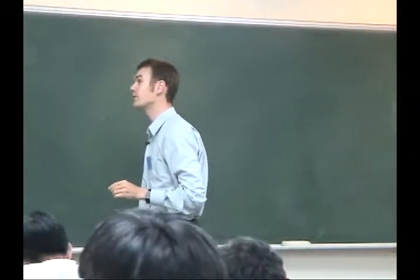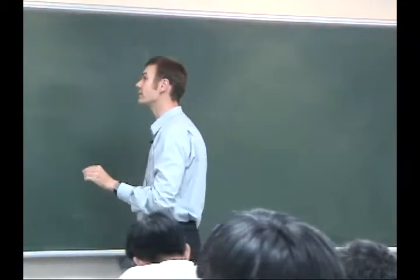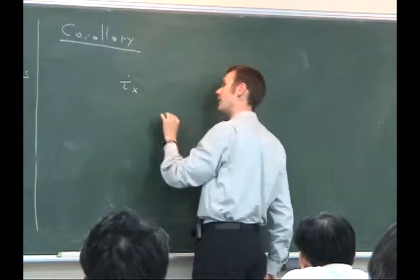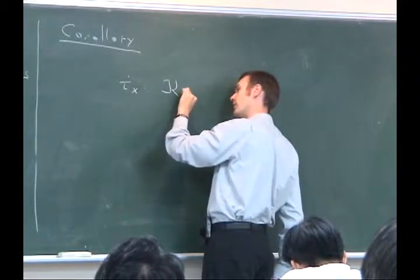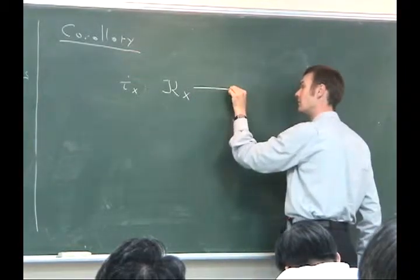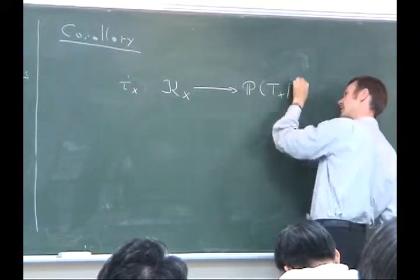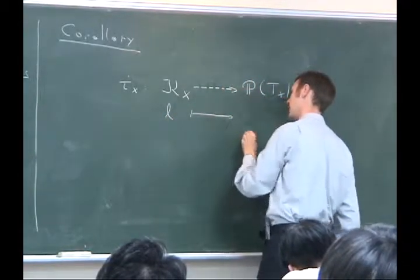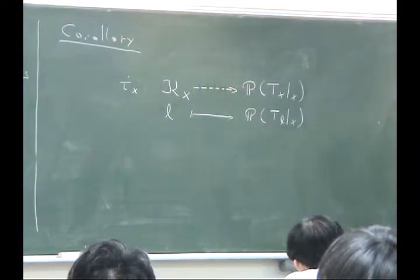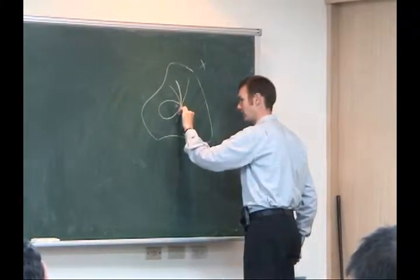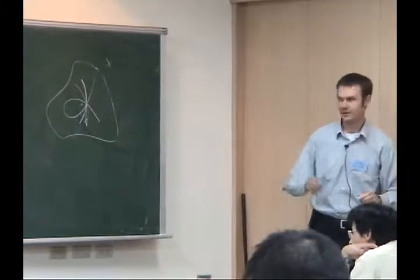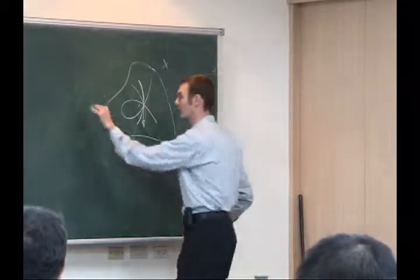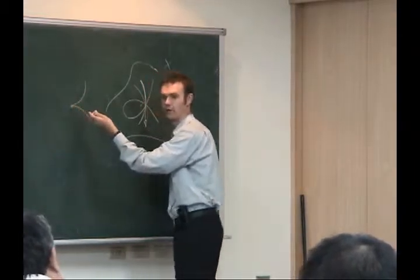Let me draw a corollary from this — a corollary to yesterday's result. If I try to define the following map: it goes from the space of minimal degree rational curves and ends up in the space of tangent directions at the point x, defined by mapping a curve to its tangent direction. This map is obviously not defined where curves are singular: if a curve has a cuspidal singularity at x, I wouldn't know what tangent direction to associate with it.